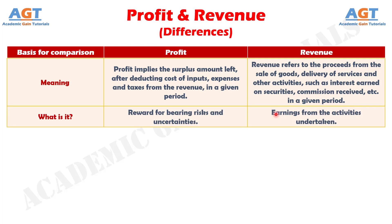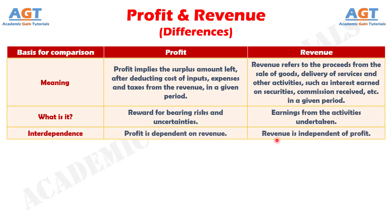Number two: profit is the reward for bearing risks and uncertainties. Whereas, revenue is the earnings from the activities undertaken. Number three: profit is dependent on revenue. Whereas, revenue is independent of profit.